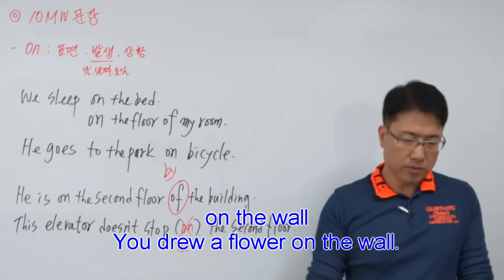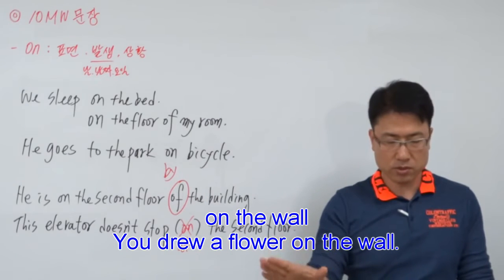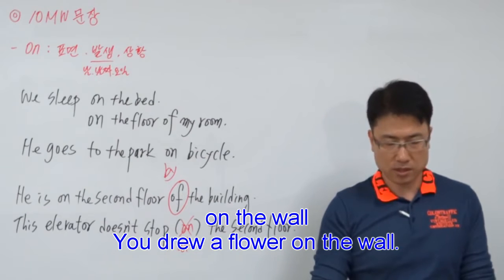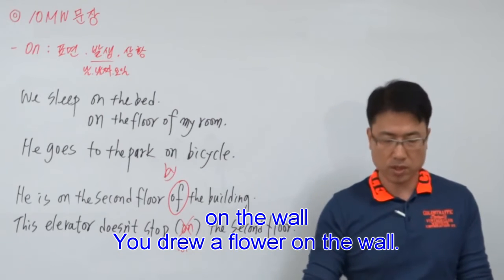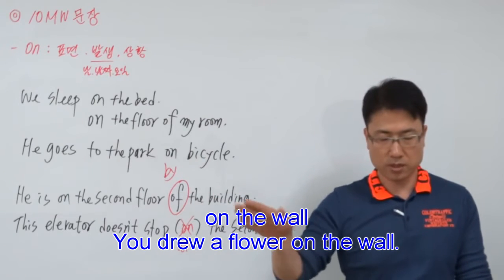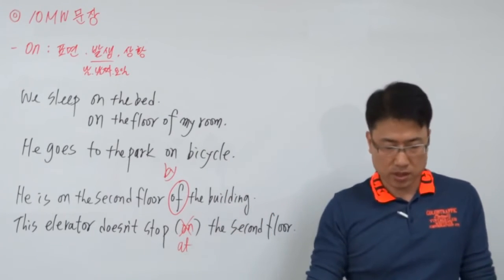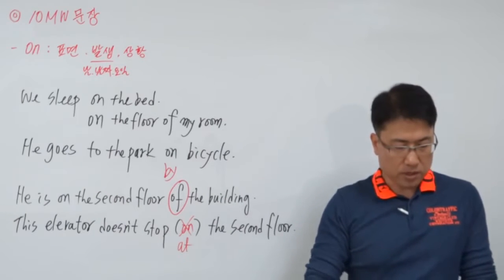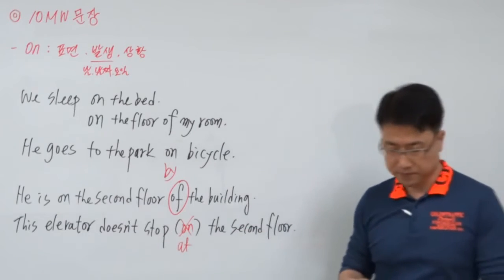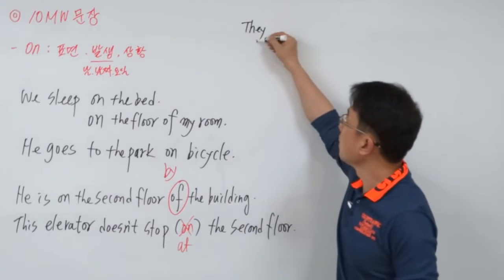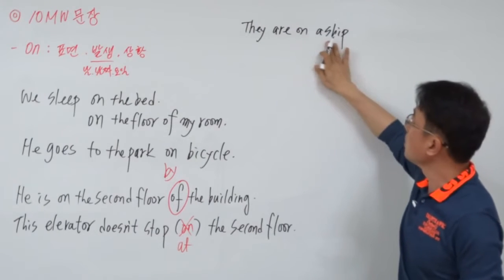그 다음에 on the wall — 표면인데 벽 표면입니다. 당신이 그렸다. 그린 게 하나의 꽃이고 꽃은 벽 표면에 있다라는 거죠. 그 벽이 뭔지도 설명하려면 of로 연결하면 되겠죠. 예를 들어 of the church — 교회의 벽이다라는 뜻이고요. 벽도 표면으로 인식하셔서 on을 쓰시면 되고요. On a ship — 마찬가지로 표면인데 배의 표면이다라는 얘기죠. They are on a ship — 그들이 배 타고 있다는 얘기죠.